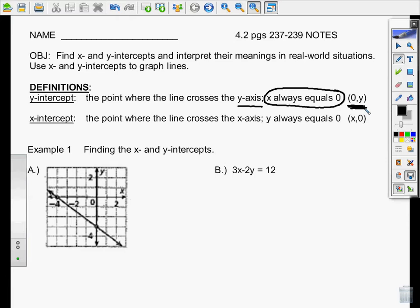So the x-intercept would then be the opposite. That's the point where the line crosses the x-axis. And of course, y always is going to equal zero. So when you write this point, you're going to write whatever the value is on x that your line is crossing, and then zero is always going to be your y.